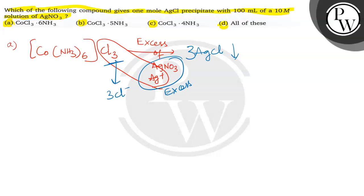But in the question, AgNO3 is not excess. AgNO3 is limited to 100 mL of 10 M solution. Means in the above reaction, AgNO3 acts as limiting agent. It is given in a fixed amount, not excess amount.